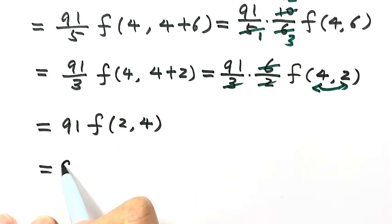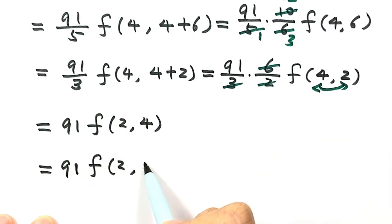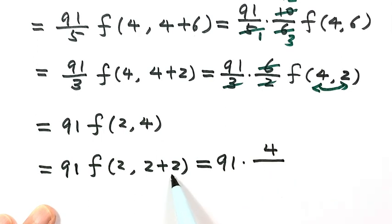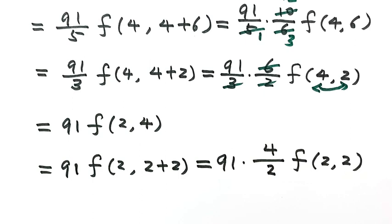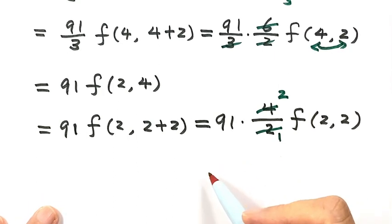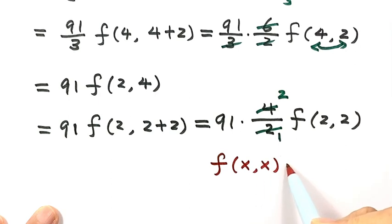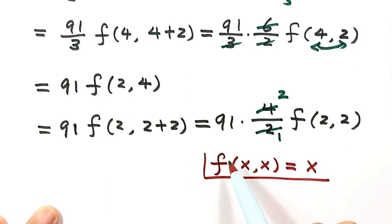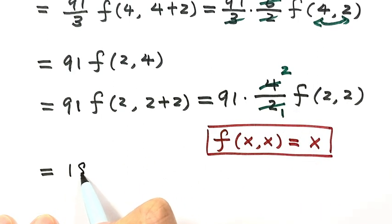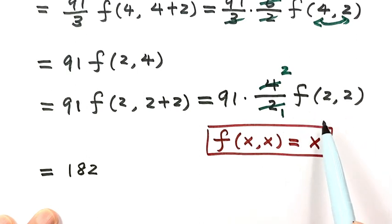Since 4 is greater than 2, we write 4 as 2 plus 2 and apply Identity 4, giving (4/2) times f(2, 2). Simplifying: the coefficient becomes 2 times 91, which is 182. Now we apply the first identity: when x equals y, f(x, y) equals x. So f(2, 2) equals 2, giving us 182 times 2.